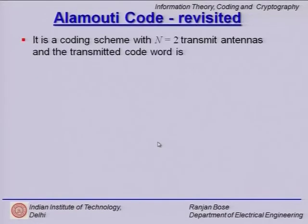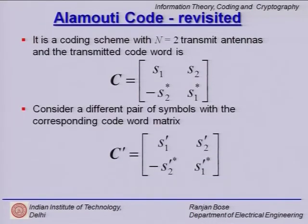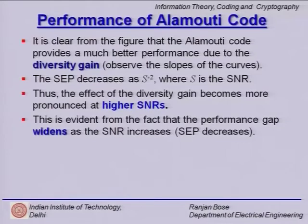The determinant criteria says that in order to achieve maximum coding gain, the minimum determinant of matrix A should be maximized for any two codewords which are not equal. We quickly revisit the Alamouti scheme with n=2 transmit antennas and look at how the diversity gain is obtained. Diversity gain is obtained by looking at the slopes of the BER curves: on the x-axis we have SNR, on the y-axis the symbol error rate, and with versus without the Alamouti code you see a distinct change in slope indicating diversity gain.